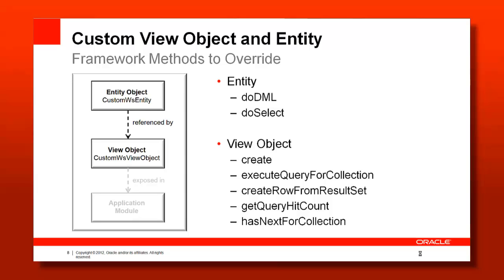It's a matter of whether the web service supports query filtering. If it does, using bind variables in the view object makes sense to avoid the penalty of large row sets being queried — always keep in mind it's an XML payload in the SOAP case. createRowFromResultSet is called for each row for you to create the custom entity object for the query data. queryHitCount tells the iterator whether there is data and how many rows there are. hasNextForCollection allows the framework to determine whether navigation buttons should be enabled or disabled. Refer to the documentation for coding hints based on PL/SQL access, then translate that to web service access.